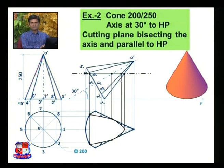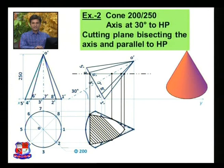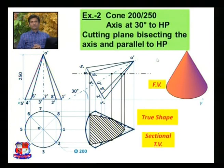If we cut this cone at this position it will appear as shown. Erase the portions that are not needed. As it is a sectional view, draw section lines at an angle of 45 degrees with the XY line, with equal spacing — about 1 mm or 2 mm depending on drawing size and available time. This is the front view, and this is the sectional top view. Since the cutting plane is parallel to the XY line, this sectional top view also represents the true shape of the section. This problem is generally asked for seven marks, two marks for each view.